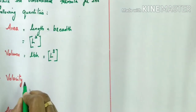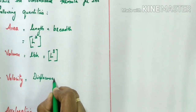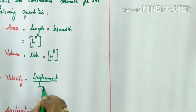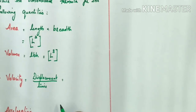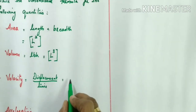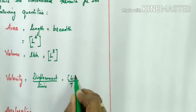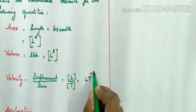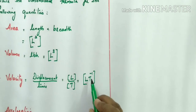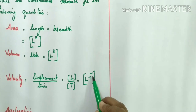Now, what is the dimensional formula for velocity? We know velocity is equal to displacement divided by time. Displacement has the same dimension as length, so its dimension is L. Therefore, velocity is L divided by T, which can be written as [LT⁻¹]. Dimension is always represented in the numerator as a power, so the dimension of velocity is [LT⁻¹].